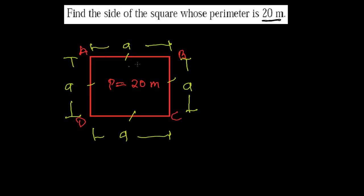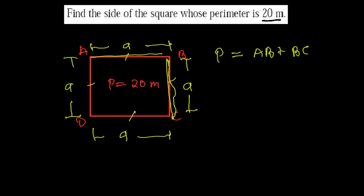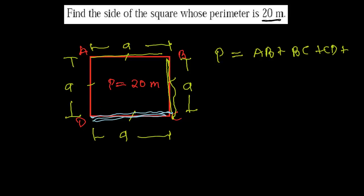We know that the perimeter of a square is the sum of all its sides: AB + BC + CD + AD.